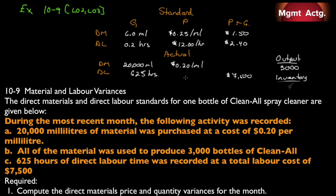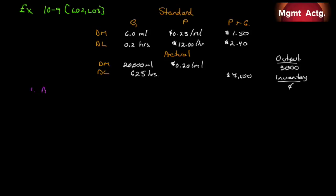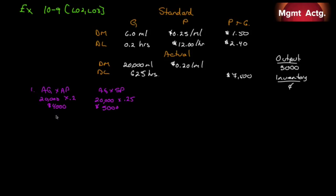Number one: compute the direct materials price and quantity variances for the month. For the price variance we need actual quantity times actual price: 20,000 times $0.20 gives us $4,000. We compare that with actual quantity times standard price: 20,000 times $0.25 gives us $5,000. So we have a price variance of $1,000 favorable.